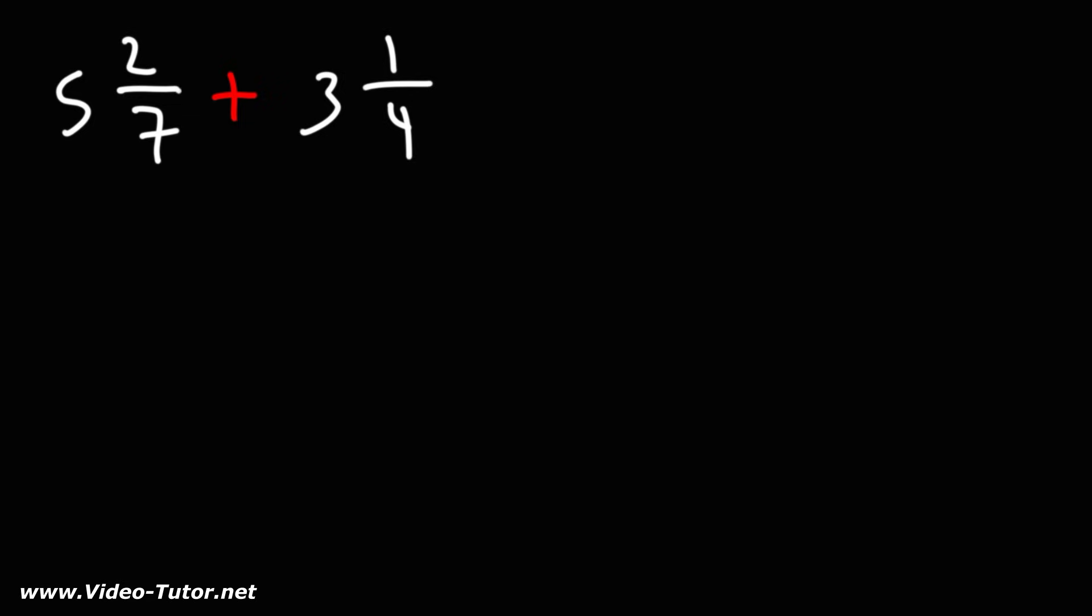So what I'd like to do is convert and expand the mixed numbers. Five and two-sevenths can be written as five plus two over seven. Three and one-fourth can be written as three plus one-fourth.